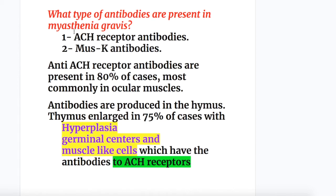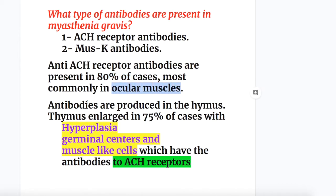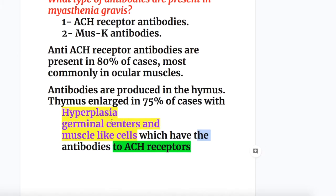Two types of antibodies are present in Myasthenia Gravis: acetylcholine receptor antibodies and MuSK (muscle-specific kinase) antibodies. Anti-acetylcholine receptor antibodies are present in 80% of cases, most commonly involving the ocular muscles, and are produced in the thymus. The thymus is enlarged in 75% of cases, with hyperplasia, germinal centers, and muscle-like cells that carry antibodies to acetylcholine receptors.